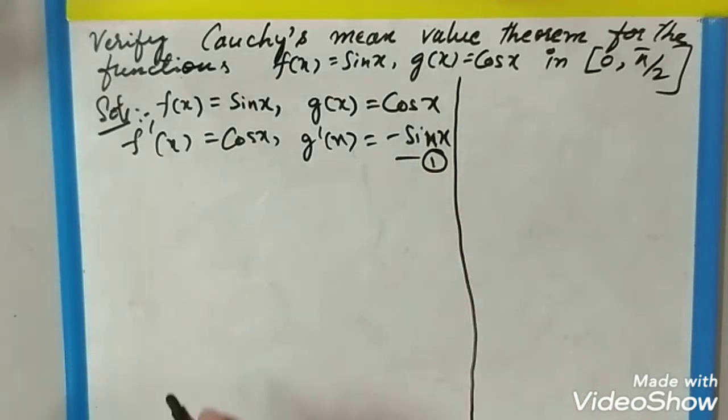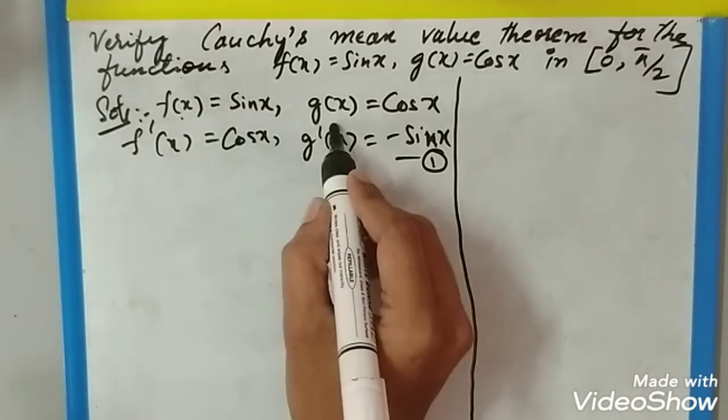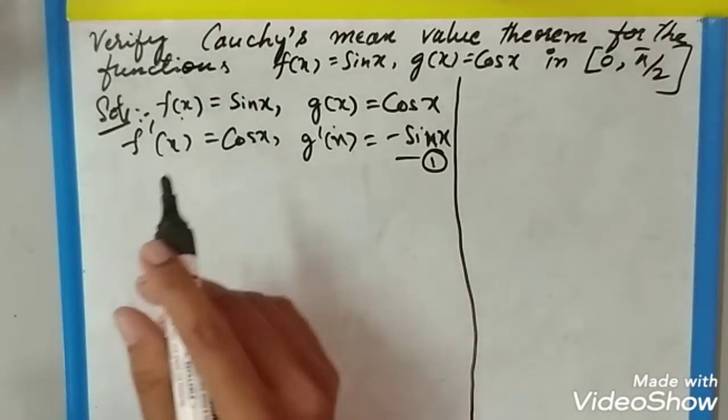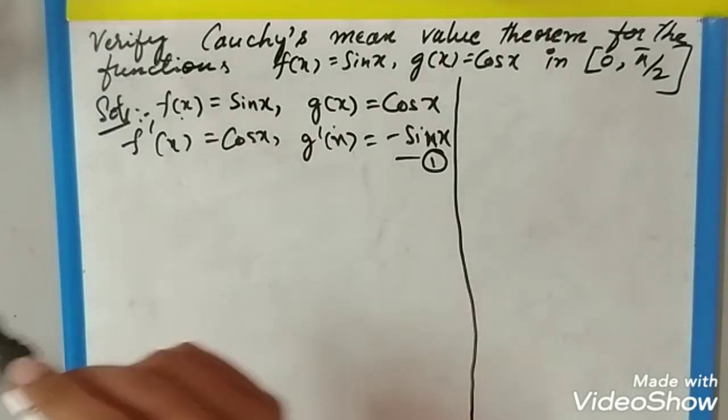This clearly shows that the functions f(x) and g(x) are continuous in the interval [0, π/2] and differentiable in the interval (0, π/2). Now from Cauchy's mean value theorem we have the formula: